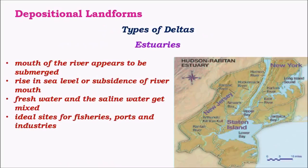Estuaries are found where the mouth of the river is submerged in the sea. This submergence happens mainly due to subsidence of the river, where the base of the river subsides or goes deep below, giving rise to an estuary. Here fresh water and salt water get mixed, hence they form an ideal site for fisheries. As both kinds of marine animals — fresh water and salt water — are found in this region, they are ideal grounds for fishing.